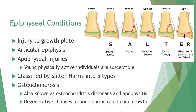Epiphyseal conditions. There are three types that can be sustained by adolescents, often involving injury to the growth plate, articular epiphysis, and apophyseal injuries. These occur most often in children aged 10 to 16 years and are classified by the Salter-Harris system into five types. Young, physically active individuals are more susceptible to apophyseal injuries. An apophysis serves as a site of origin or insertion for muscles. Common avulsion conditions include Sever's disease or Osgood-Schlatter's disease — traction-type injuries where tissue pulls away from the bone, causing the body to lay down calcium, resulting in a bony nodule.